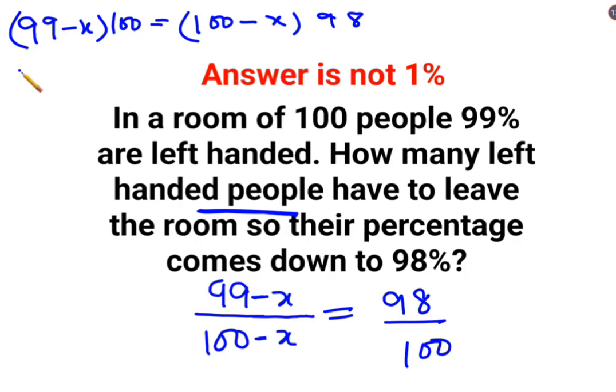Now when you do this, let's open the brackets. So we have 9900 minus 100X equals to 9800 minus 98X.